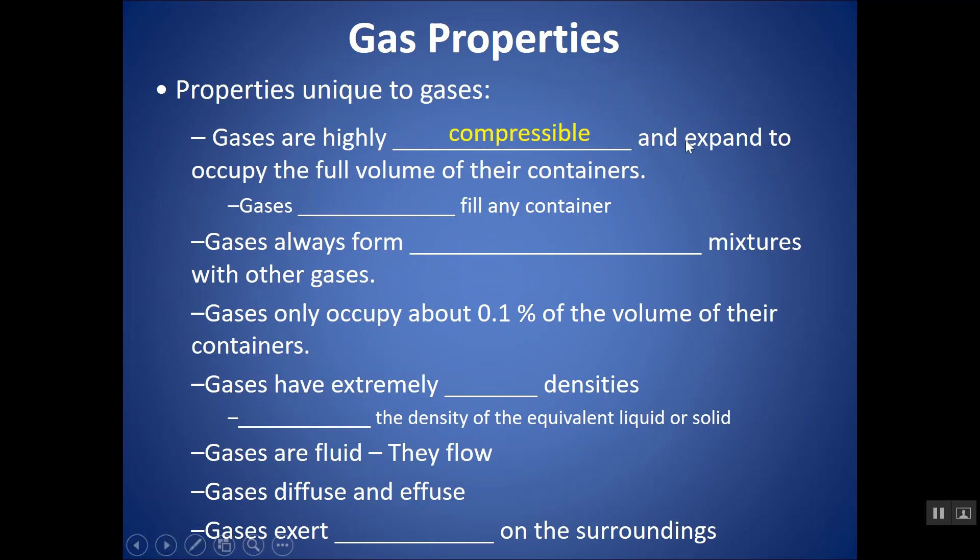Gases are highly compressible, meaning they compress or expand to occupy the full volume of their containers. Gases uniformly fill any container. Since they uniformly fill their container, if you put more than one gas into a container, they will always form a homogenous mixture. Gases only occupy about 0.1% of the volume of their container. Gases have extremely low densities. Just to give you a comparison, if you're comparing the gas to its equivalent liquid or solid, it's about one-thousandth the density. They're fluid and flow, they diffuse and effuse, which we'll learn about in this chapter. And they exert pressure on the surroundings.